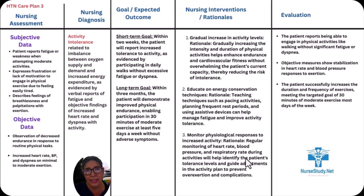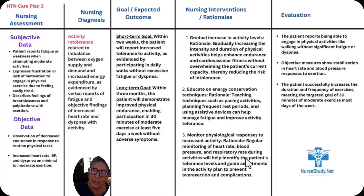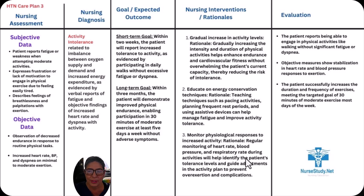Goals: Short-term — within two weeks, the patient will report increased tolerance to activity, as evidenced by participating in daily walks without excessive fatigue or dyspnea. Long-term — within three months, the patient will demonstrate improved physical endurance, enabling participation in 30 minutes of moderate exercise at least three to five days a week without adverse symptoms, adjusted based on the age and status of the patient.